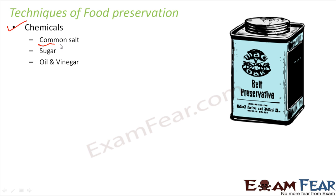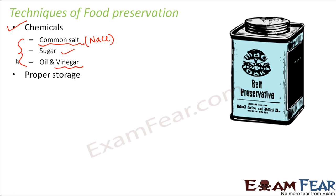Some of the techniques include using chemicals — such as common salt (sodium chloride), sugar, oil, and vinegar (acetic acid) — which help to preserve food so that it is not attacked by microorganisms. Other techniques include proper storage in sealed containers, and heat and cold treatment.